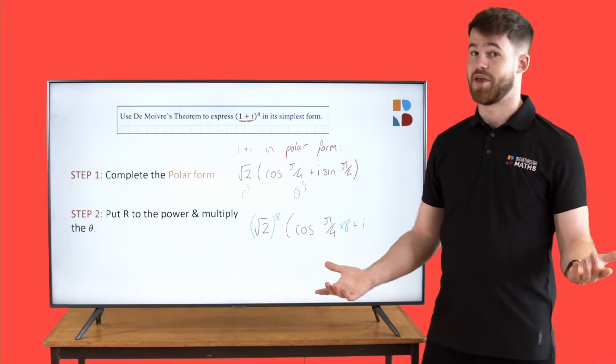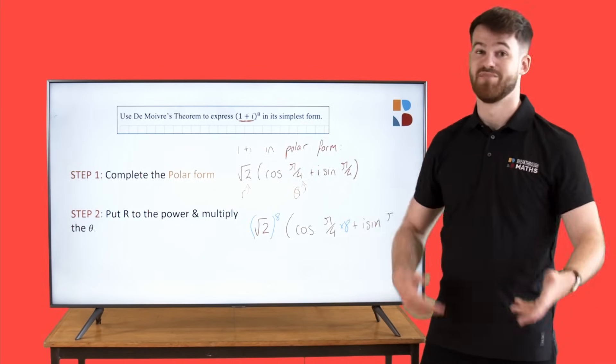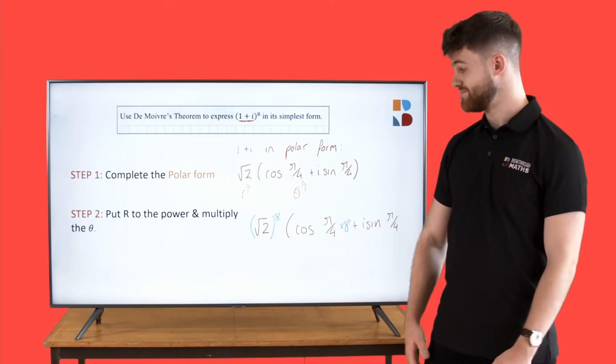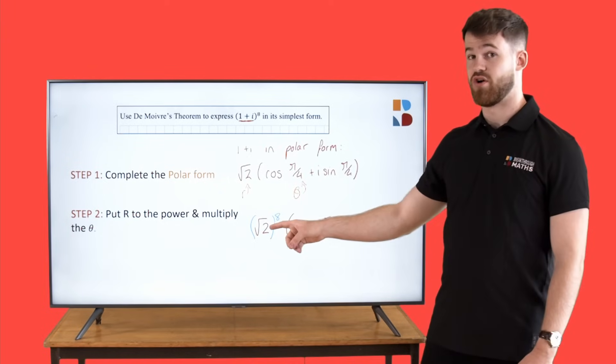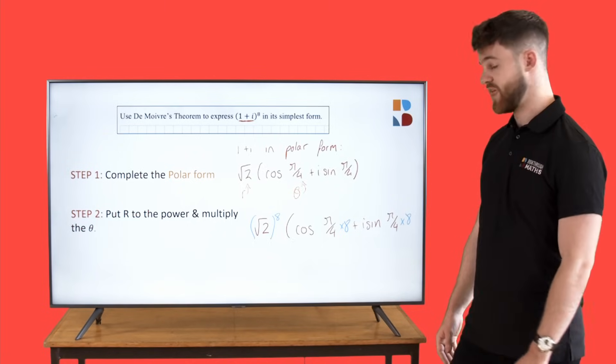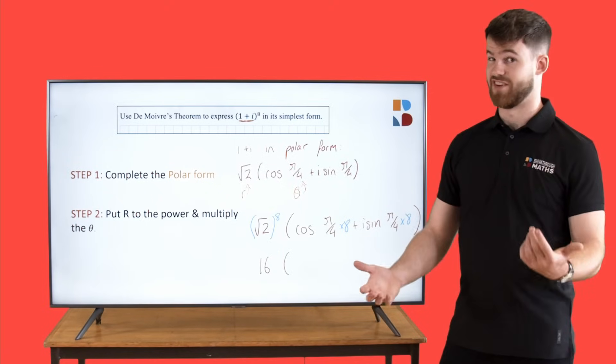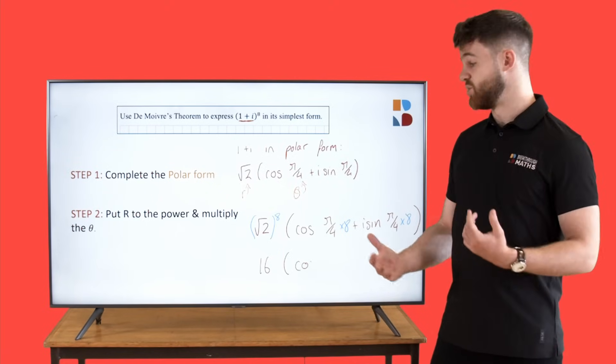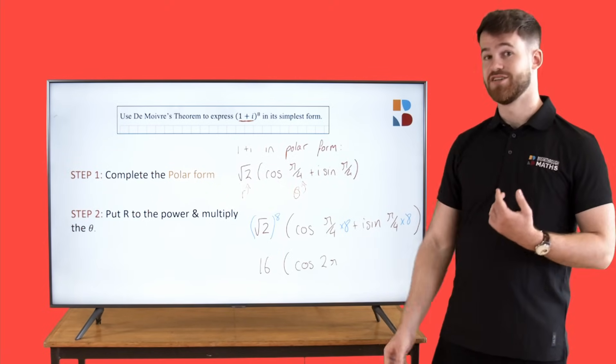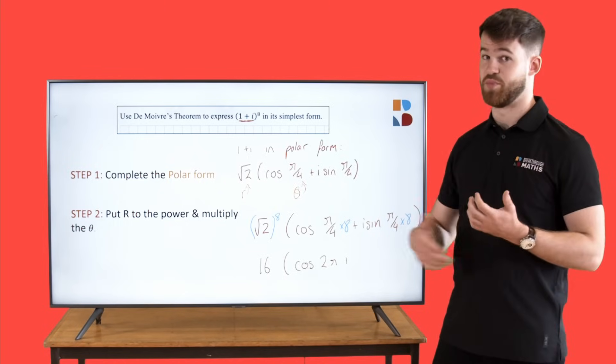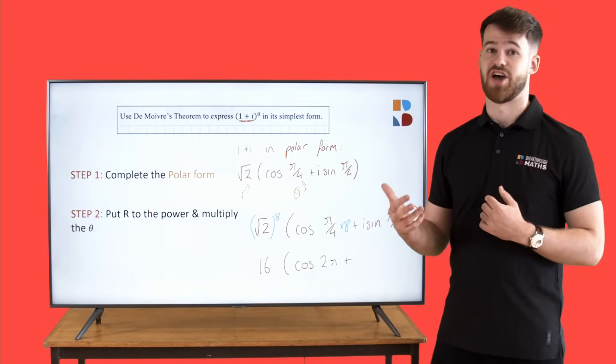And now it's just going to be a matter of using your calculator and solving this down. Root 2 to the power of 8 is just 16, and pi over 4 multiplied by 8 is just going to give you 2 pi. So we're going to be left with 16 times cos 2 pi plus i times sin 2 pi.